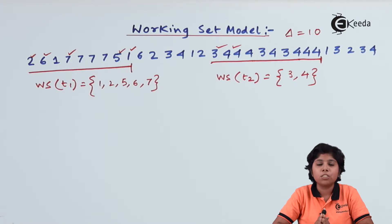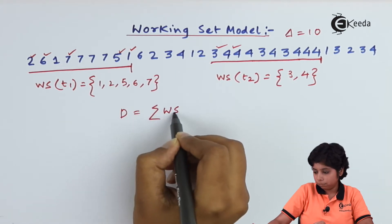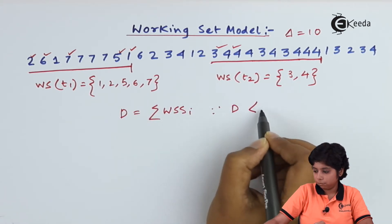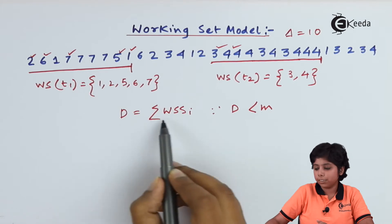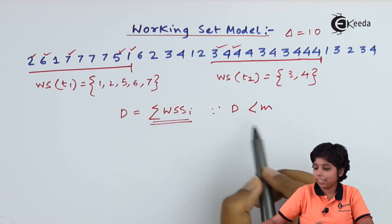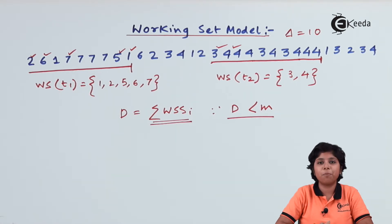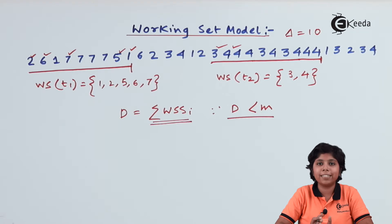Thrashing occurs when processes do not have enough frames in memory. If the working set size (WSS) is defined for each process, then d equals the summation of each process's working set size. d should always be less than m, where m is the number of available frames.